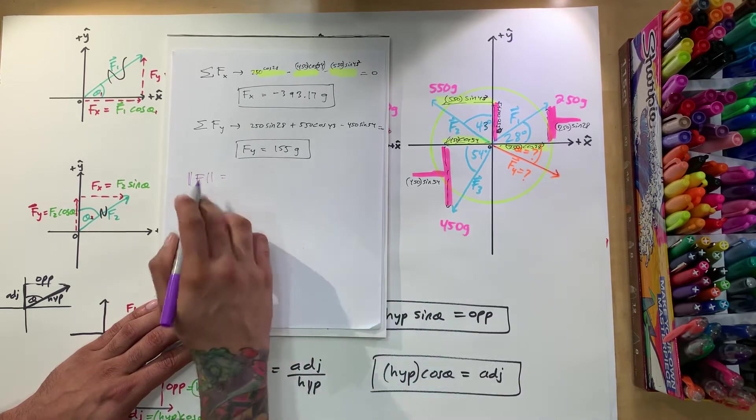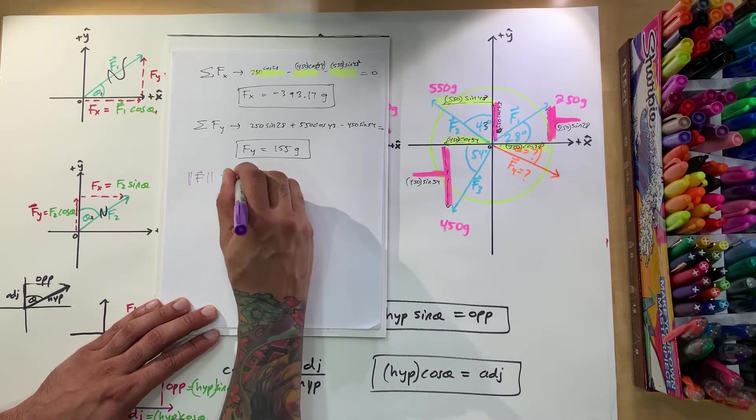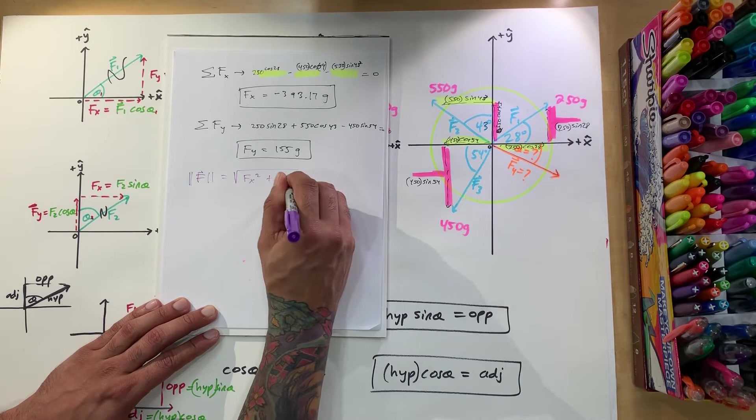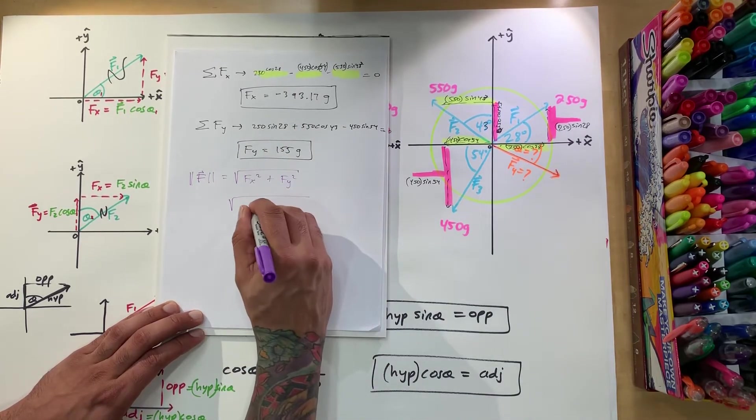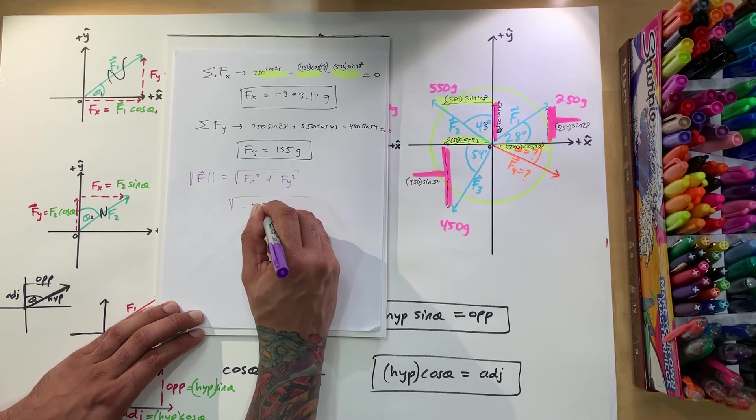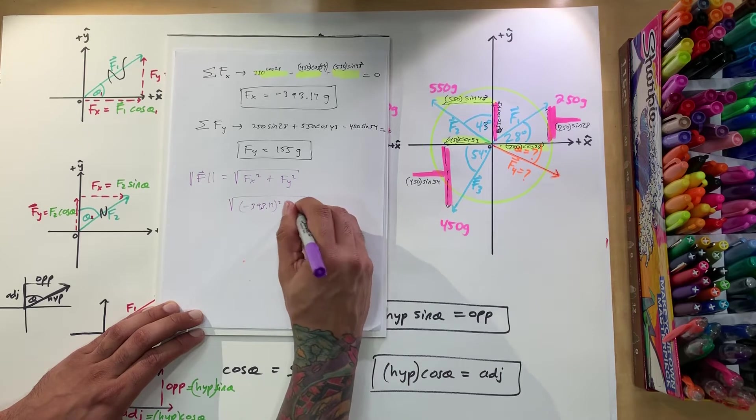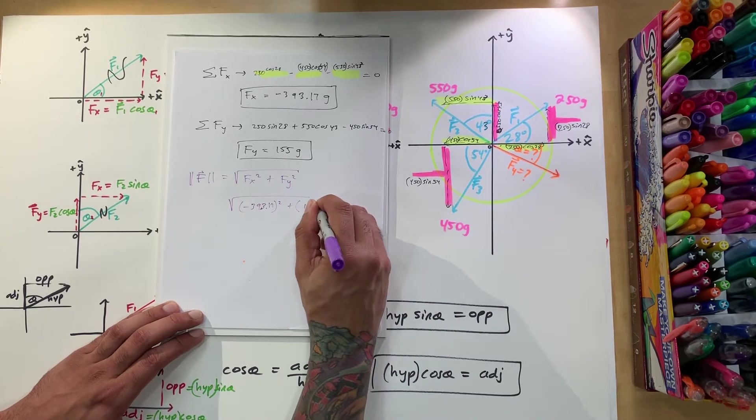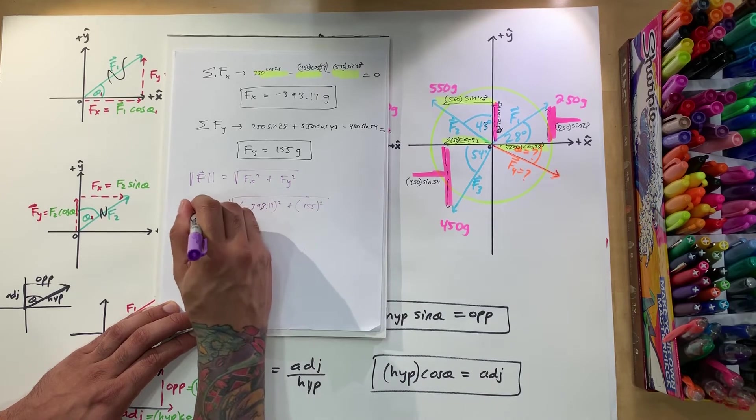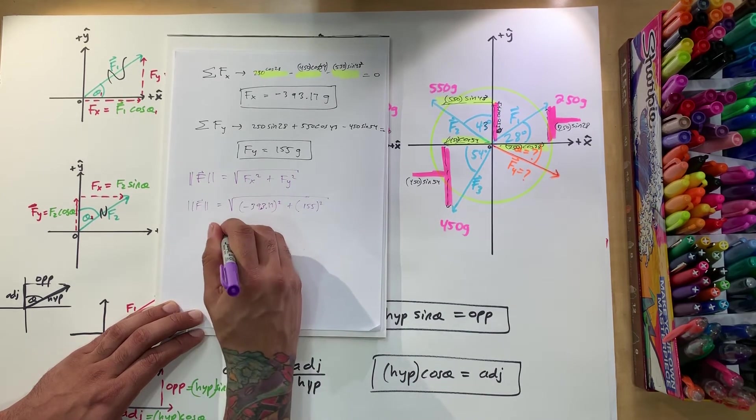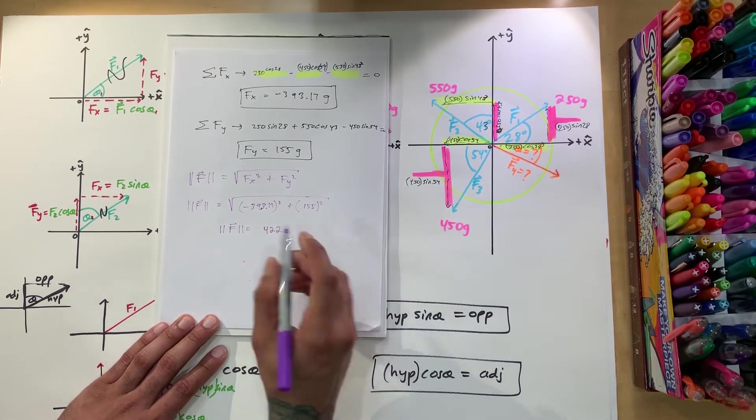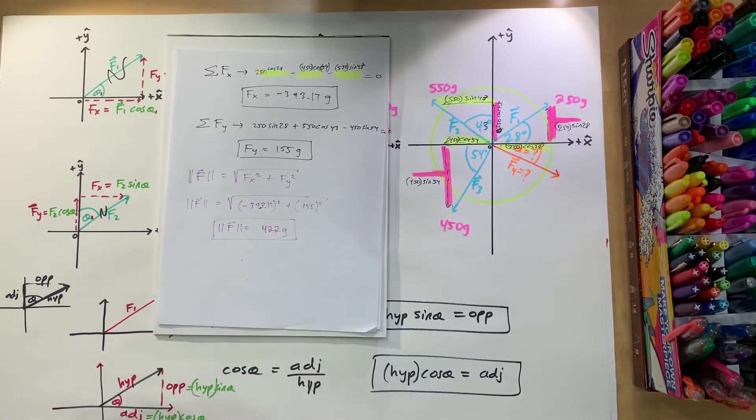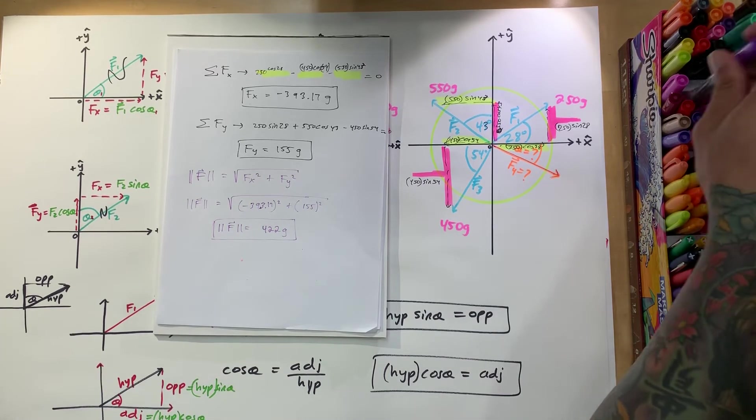So we want to use the magnitude equation. We got Fx squared plus Fy squared. Right, when we put Fx in here, we got negative 393.17 squared plus 155 squared. Right, and that's going to give us a magnitude of, we're going to get 422, and that's in grams. Okay, perfect. So that's how much weight we got to put here, alright, to balance things out. But at what angle?